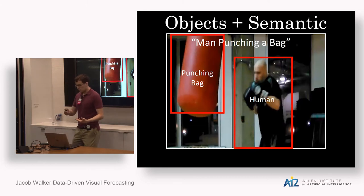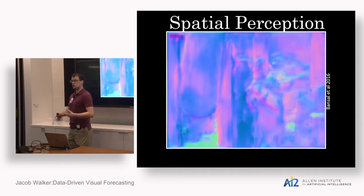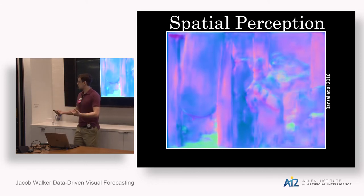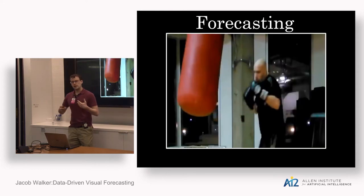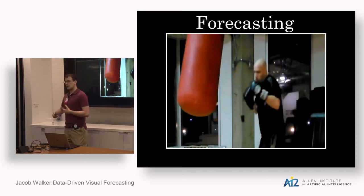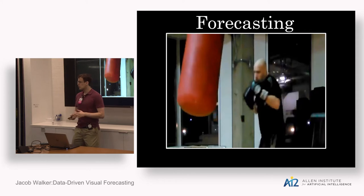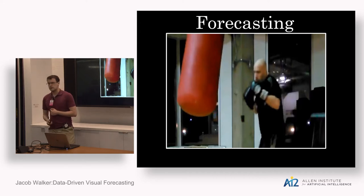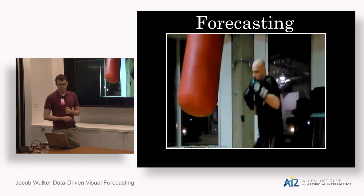There is also the spatial or geometric aspect of an image — things like depth perception, surface normals, or the 3D configurations of objects in the scene. However, we as humans can perceive more than just that. We know that an image is a window to a world that is also temporal. We can tell, for instance, that the boxer is probably going to punch the punching bag, and the punching bag is probably going to fall towards the boxer in the next instant.